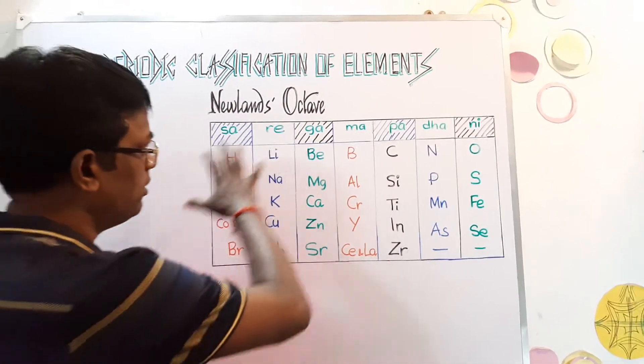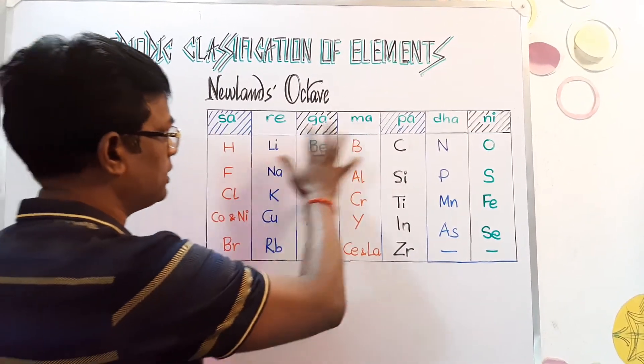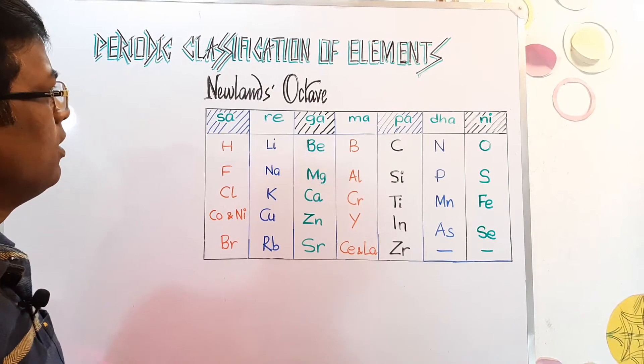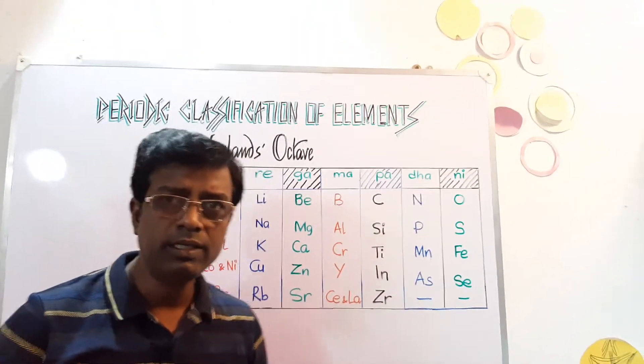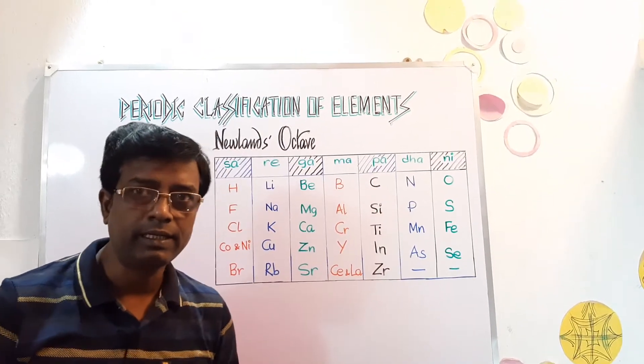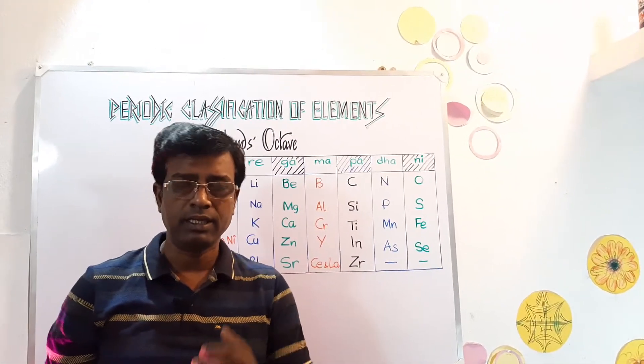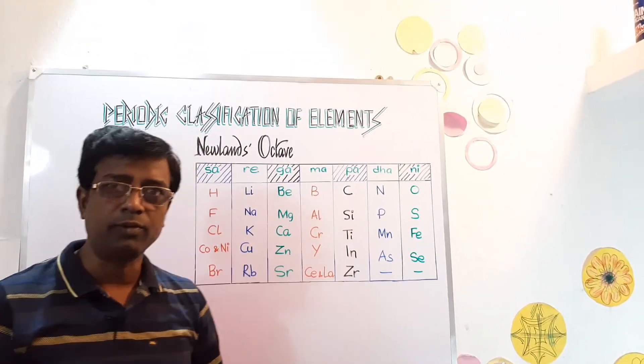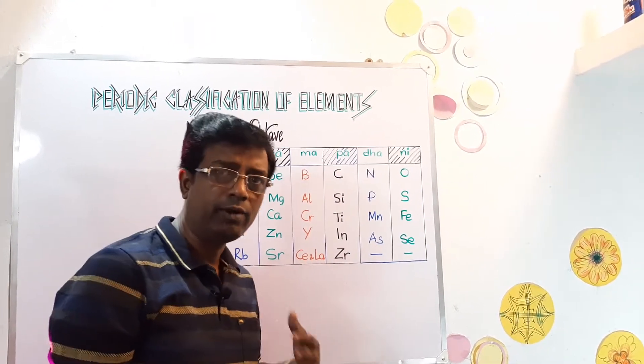Let's first introduce to the Newlands table. Now here this is the table made by him, Newlands Octave. The interesting thing here, the elements were arranged in increasing order of atomic masses such that similar elements in terms of chemical properties they fall in the same group.